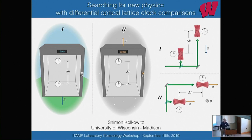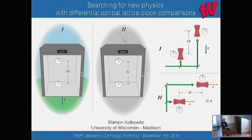It's also nice because I get to follow up Andrew, who gave a nice introduction to optical lattice clocks and how they can be used to probe new physics. I'm also going to talk about that, but I'm going to focus on one particular kind of measurement that Andrew didn't really talk about, which is differential optical lattice clock comparison — comparisons between two clocks where we do synchronized simultaneous comparisons and just look at differences between them. I'll try to convince you why I think that's interesting and what some of the measurements we want to do along those lines are.